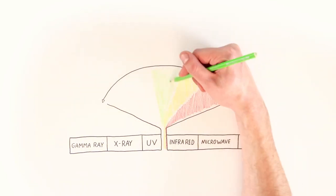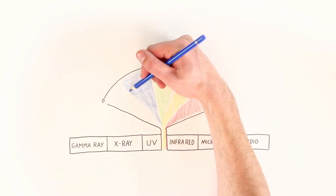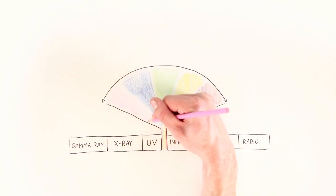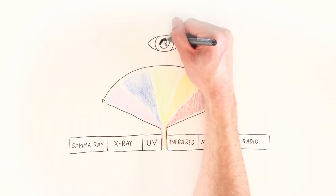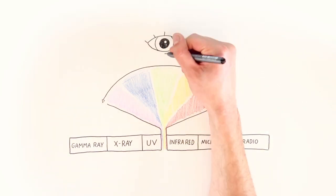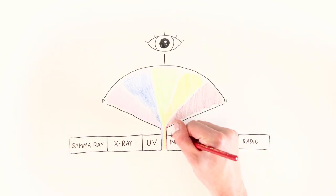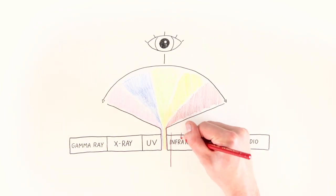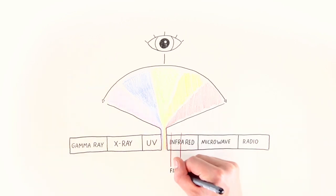As humans we cannot consciously perceive other wavelengths. Just the same, there are specific materials that react to certain wavelengths. The Trotec fiber laser with its wavelength 1.064 micrometers is approximately here.